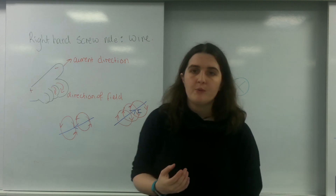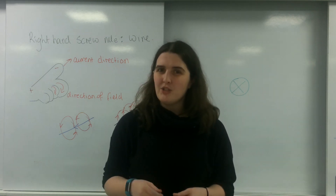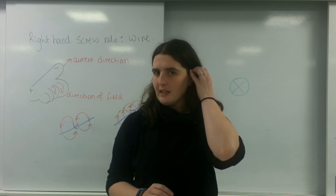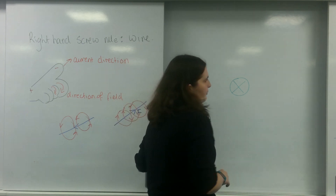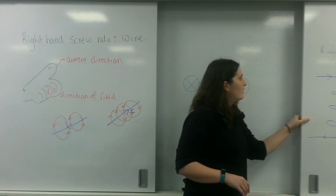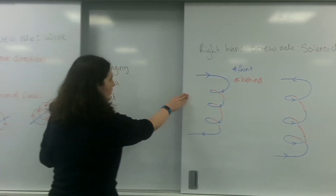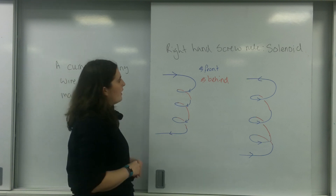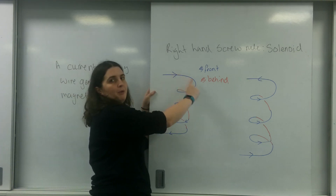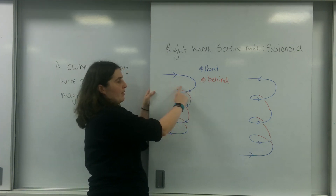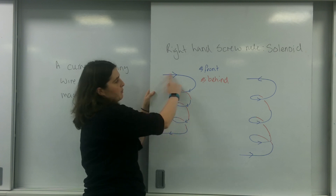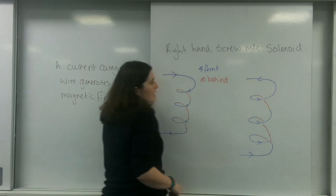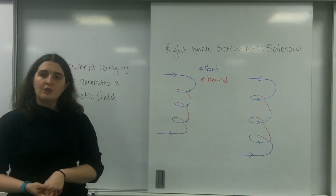In electromagnetism, we tend to use coils of wire, which slightly changes the rules. What I have here is something called a solenoid, which is a coil of wire. I've drawn it so that blue is the bit in front and red is going behind, so this wire is looping around. I've got the current going in two different ways.